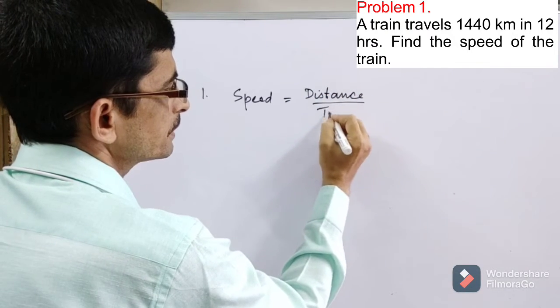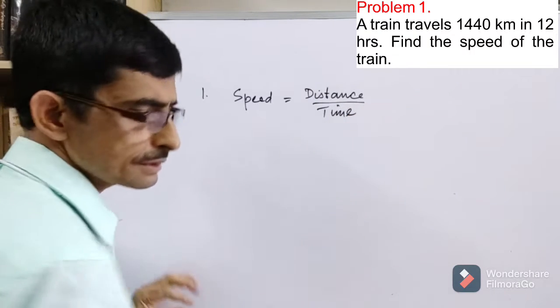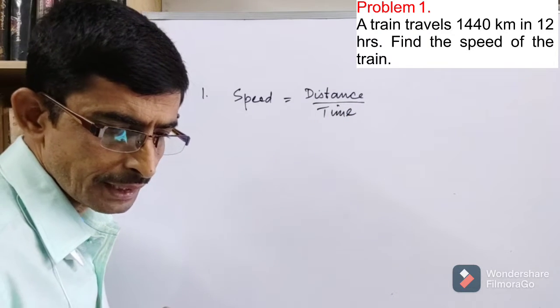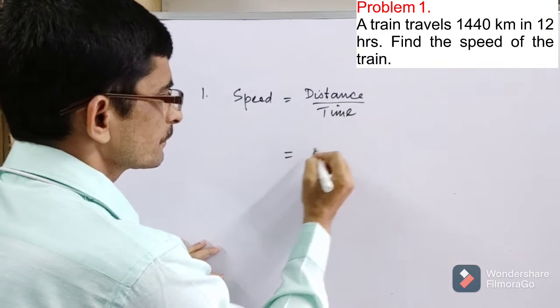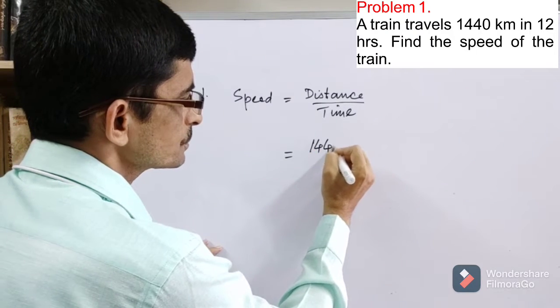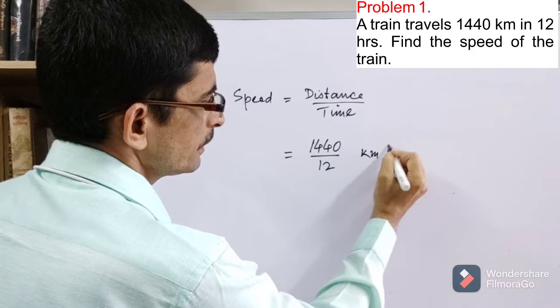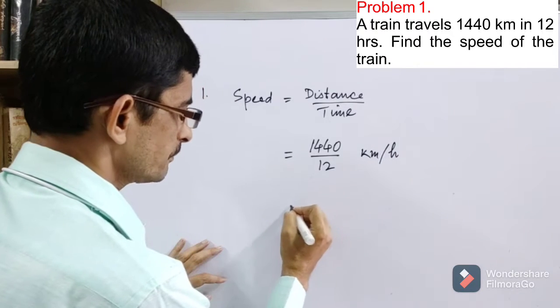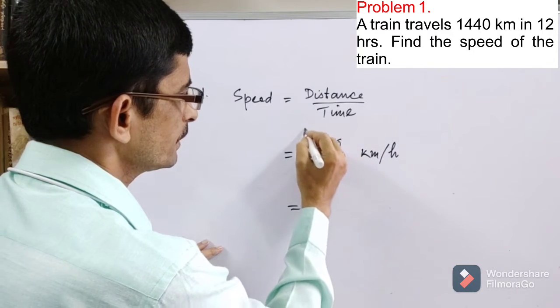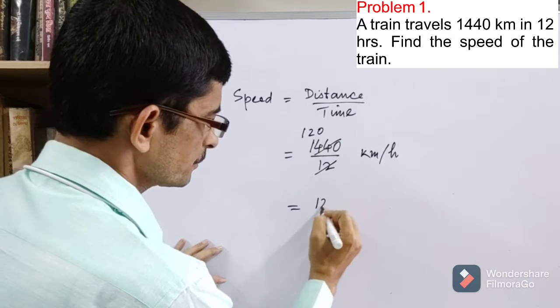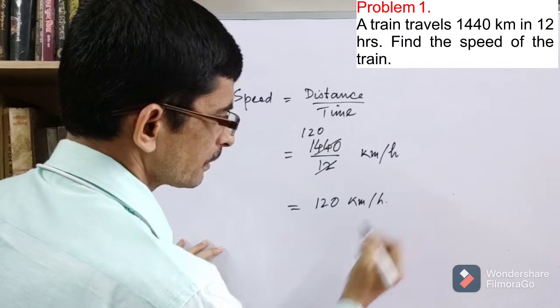divided by time. Distance it covered divided by time taken. Put the values: distance is 1440 kilometers and time taken 12 hours, and the answer will come as kilometer per hour. If you simplify, it will be 120 kilometer per hour.